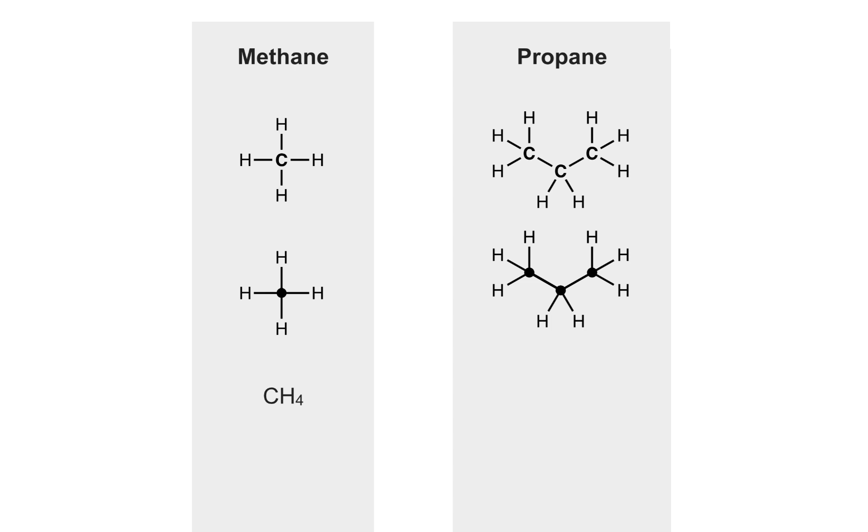Since chemists always know that carbons make four bonds, it's common to omit the hydrogens in these drawings. It's not that the hydrogens aren't there, it's just a shorthand. Finally, chemists can remove the black dots altogether, leaving only the bonds. Believe it or not, this V-shaped drawing means propane to a chemist, as do all the drawings on the right side.